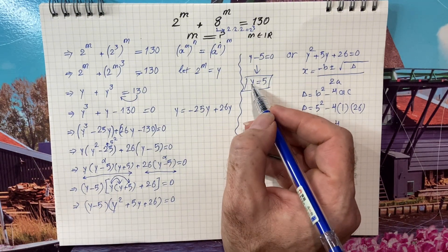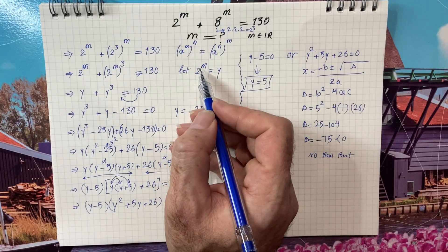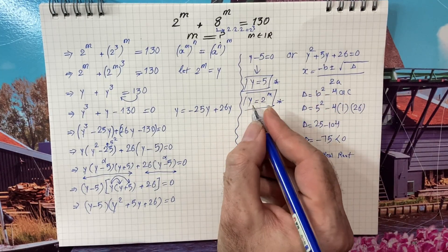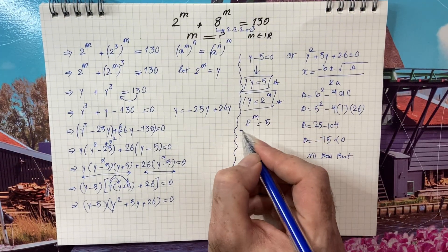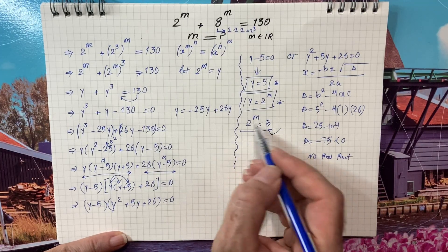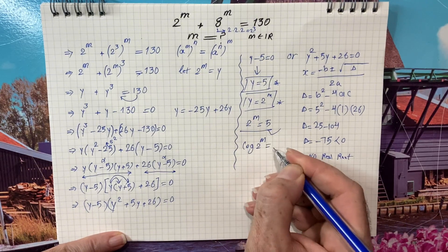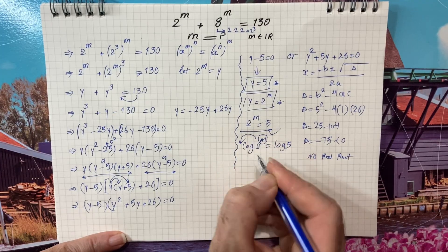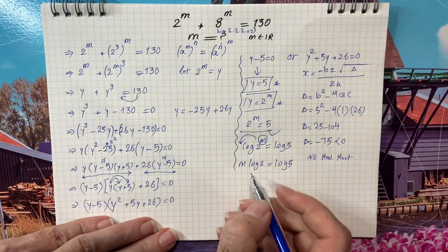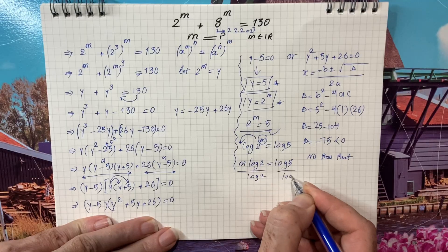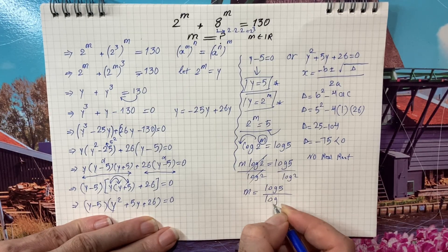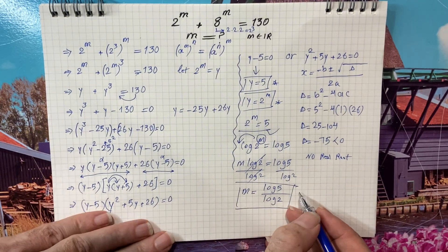So our answer comes from y equals 5. Recall we let 2 to the power of m equal y, so we can write 2 to the power of m equals 5. Taking the log of both sides gives log of 2 to the power of m equals log 5. Moving m in front gives m times log 2 equals log 5. Dividing both sides by log 2, m equals log 5 over log 2. This is the most simplified answer.